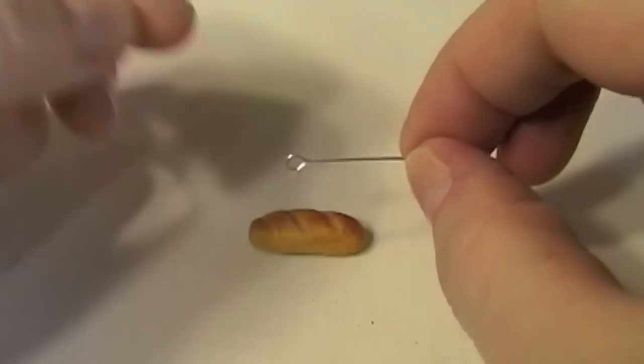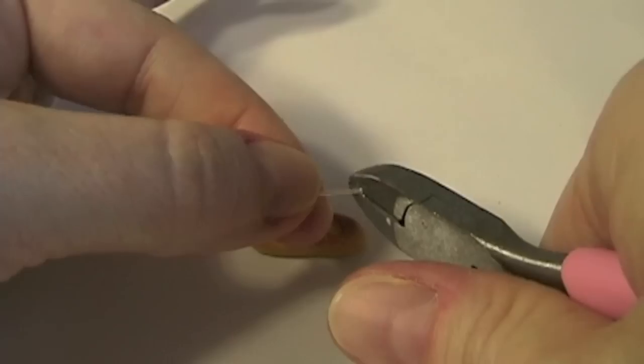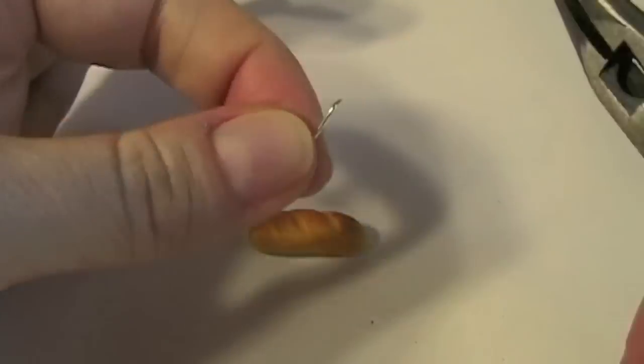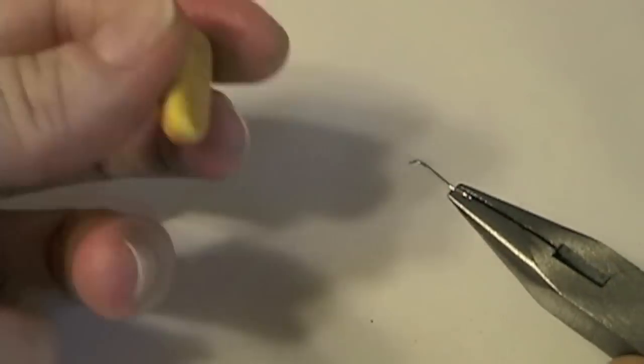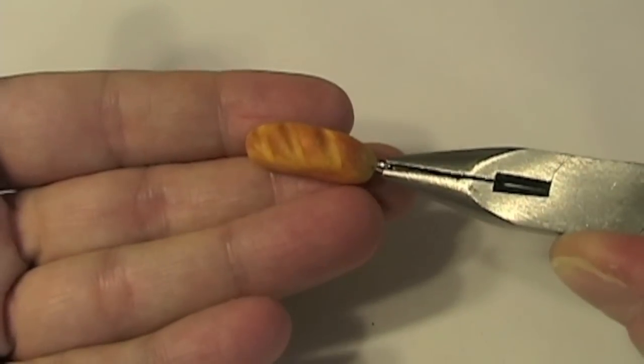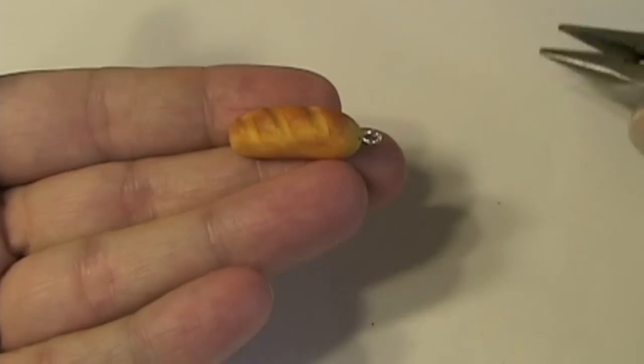We need to add an eye pin. Bake in the oven at 275 degrees for 30 minutes.